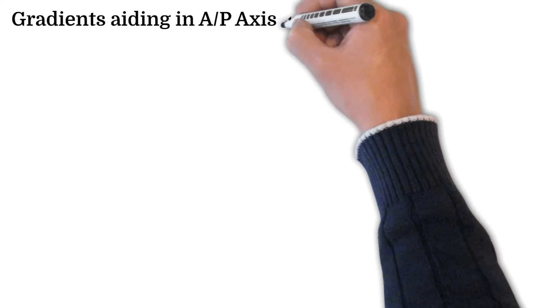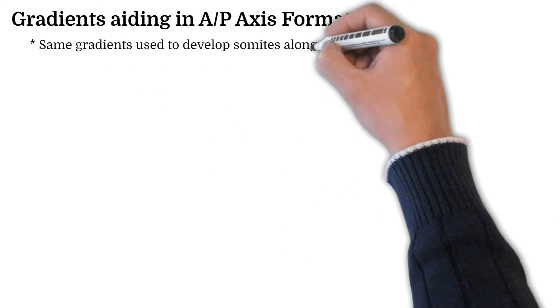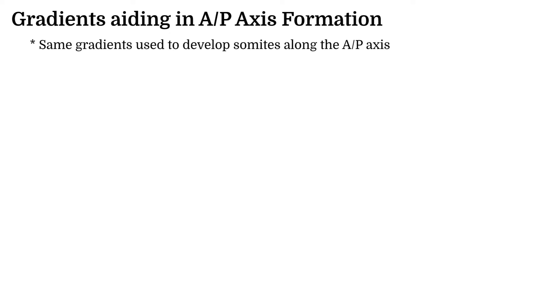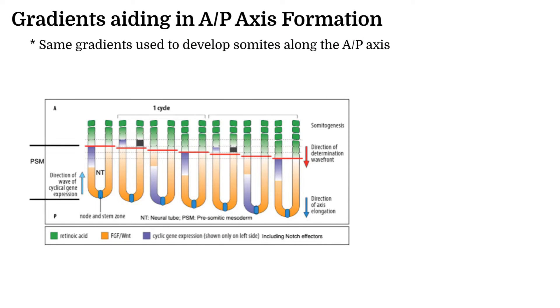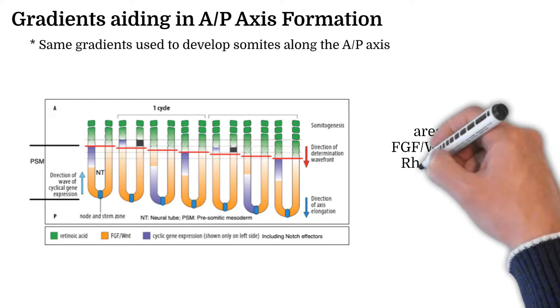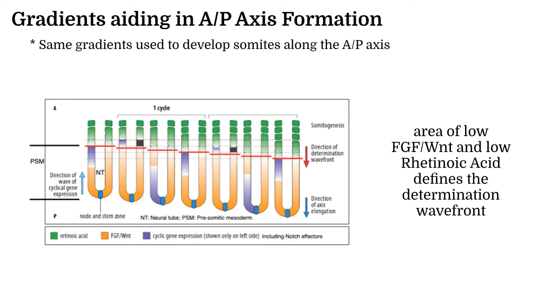Gradients became involved again during the creation of somites along the axis. These gradients involve a familiar protein, Wnt. Somites develop from the anterior to the posterior, and the newest somite forms along what is known as the determination wavefront, which aligns with where the fading concentrations of Wnt and retinoic acid reach each other. These somites end up forming the key segmented components along the central nervous system, again proving the importance of gradients in the formation and position of the anterior posterior axis.